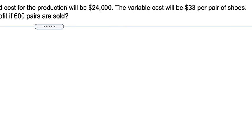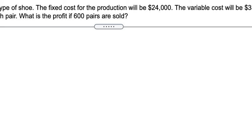The variable cost will be $33 per pair of shoes. The question asks what is the profit if 600 pairs are sold? That means we need to find the total profit of 600 pairs.